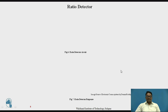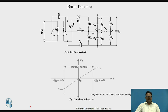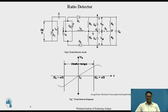Next is the ratio detector. This is the circuit and this is the frequency response for the same. This circuit is similar to the Foster-Seeley detector, but there is a minor change: diode D2 is connected in reverse bias condition. The rest of it is the same.